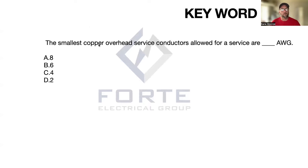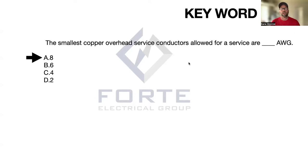Going back to our question: 'The smallest copper overhead service conductors allowed for a service are blank AWG.' The answer is 8. That's how you use the index. Take your questions, pull out the keywords, look them up in the back of the book, and that will take you into the articles themselves where you can answer the question. If you need practice questions, I'll leave a link below — but you have to practice pulling out those keywords.